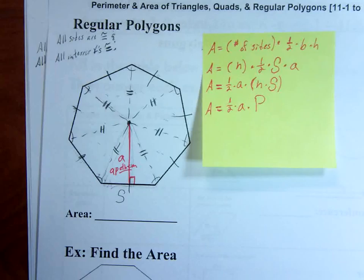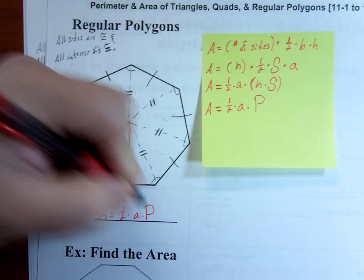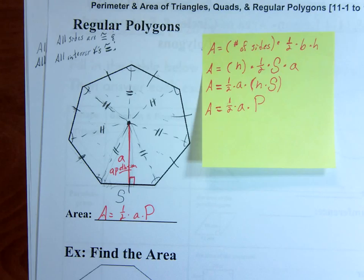And we need to write that down here. Area, 1 half times the apothem times perimeter. So now, really, when we find the area, we just need two things. When we have those two things, we can then use it to find area. We need an apothem and we need a perimeter. So that is our goal from now on, to find those two pieces.